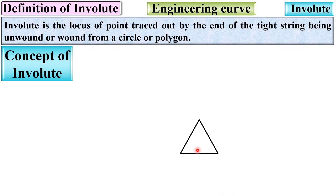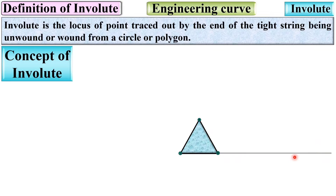Here you can see this is the triangle, considered as a polygon. I am going to wind the tight string on this triangle. These are the three different vertices of this triangle, and this is the string that I am going to wind on the perimeter. According to this definition, if the tight string is wound on this perimeter, then the locus of the point traced out by the end of the tight string is known as the involute of triangle.